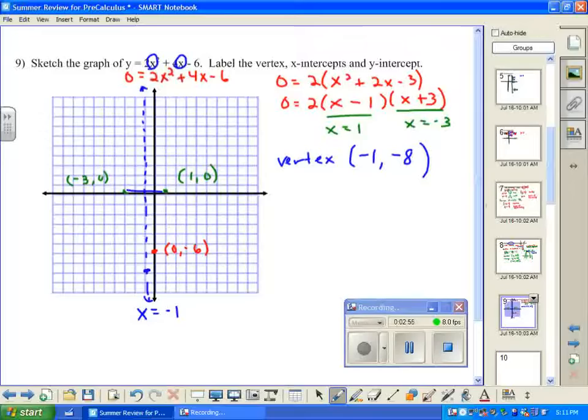Sketching our parabola, we can also include this point as well, since it would be the reflection of the point (0, -6) over that axis of symmetry. Then we connect our x-intercept, vertex, y-intercept, and x-intercept, and there's the graph of our parabola.